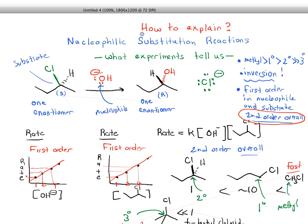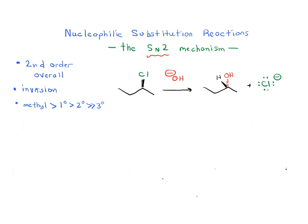The question was, how do we explain all these results? How do we come up with a mechanism that helps us understand how this reaction actually happens? I've redrawn the reaction in a slightly neater form. It's second order overall, it goes with inversion, and methyl is faster than primary, secondary, and much faster than tertiary.